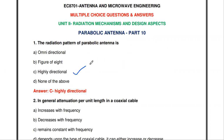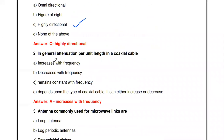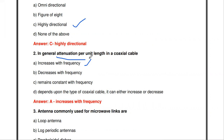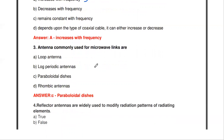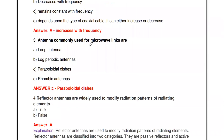The next question: in general, the attenuation per unit length in a coaxial cable (a) increases with frequency, (b) decreases with frequency, (c) remains constant with frequency, (d) depends upon the type of coaxial cable. Attenuation means the signal reduction, the loss of signal per unit length in a coaxial cable. It increases with frequency.